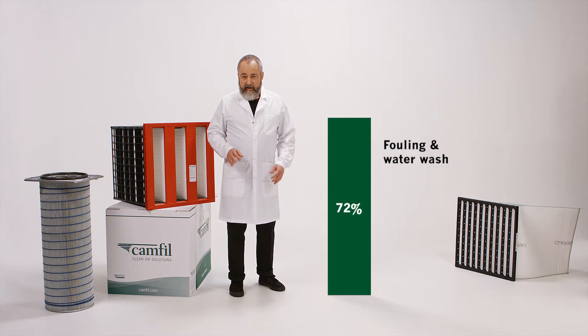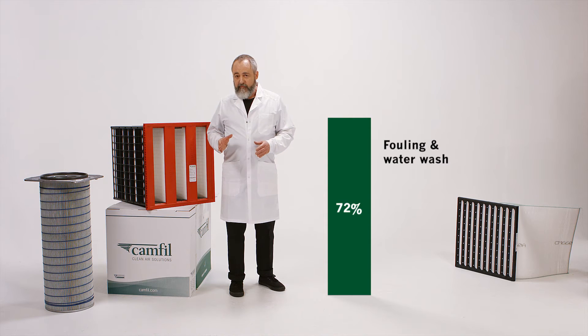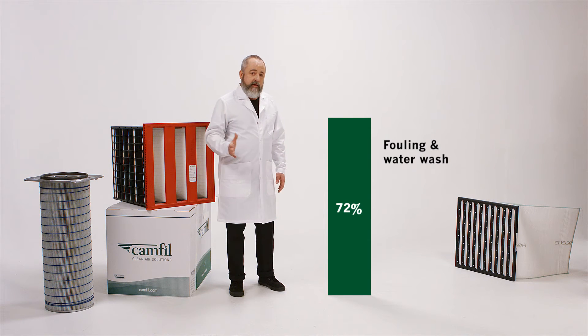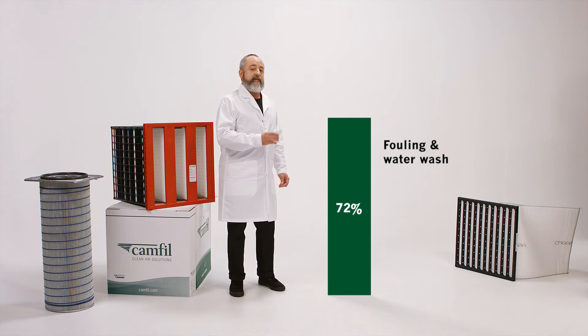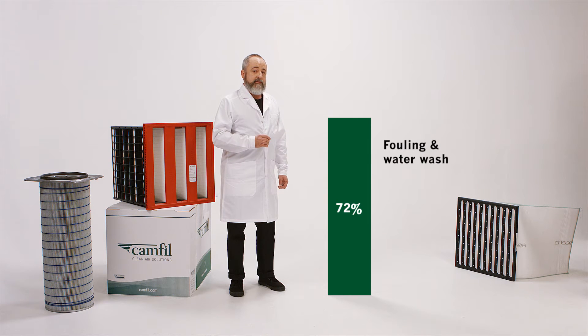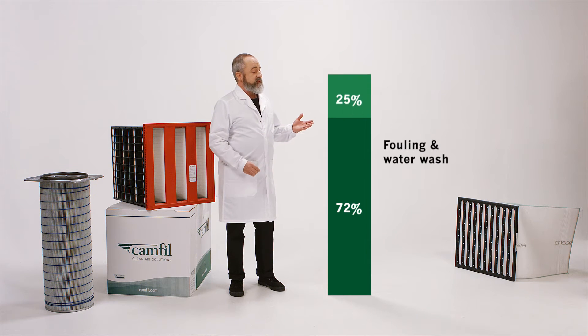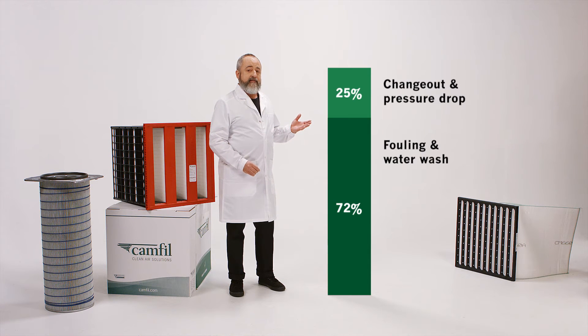As the turbine needs a filtration system for protection, it also means there will be a pressure drop over the system. The turbine consumes more fuel to pull the air through the media, adding to the total cost approximately 25%.